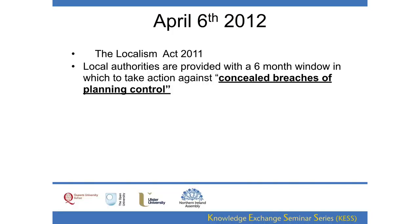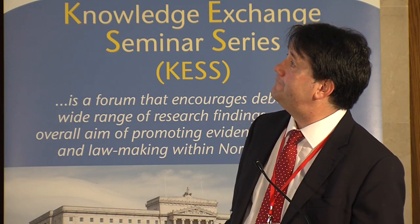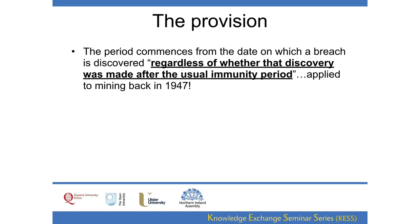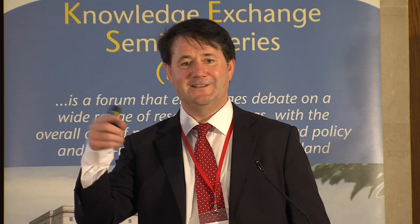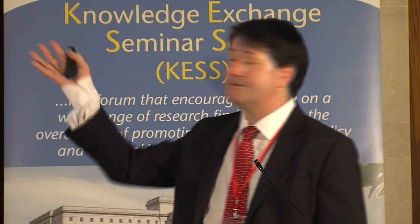On the 6th of April 2012, England produced the Localism Act. Local authorities are now provided with a six-month window in which to take action against concealed breaches of planning control. The period commences from the date on which a breach is discovered, regardless of whether the discovery was made after the usual immunity period — echoing the original mining exception from the beginning of this talk.